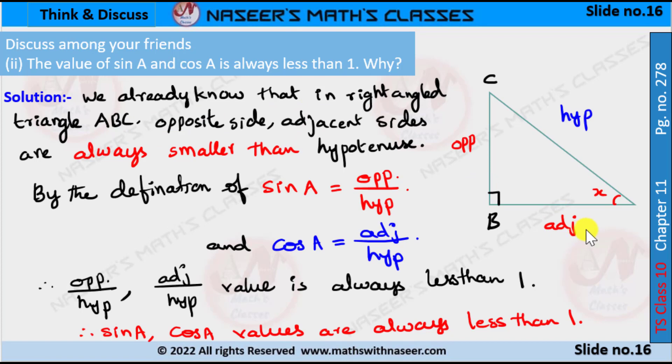By the definition of sin A, we can define it as a ratio between opposite side and hypotenuse. And cos A is defined as the adjacent side by hypotenuse. Opposite side by hypotenuse and adjacent by hypotenuse value is always less than 1. Therefore, sin A and cos A values are always less than 1.